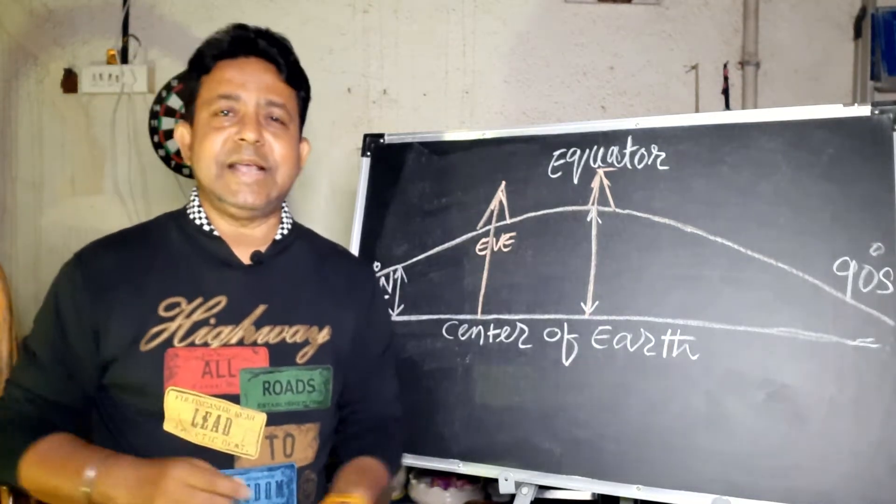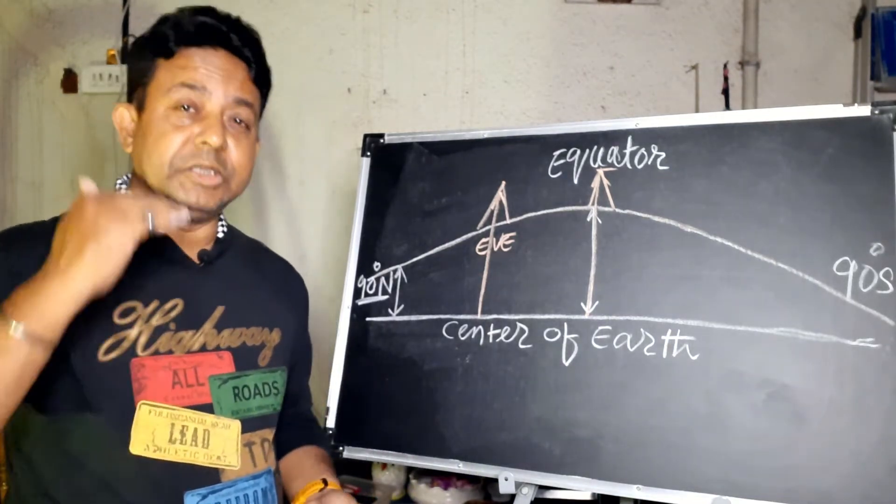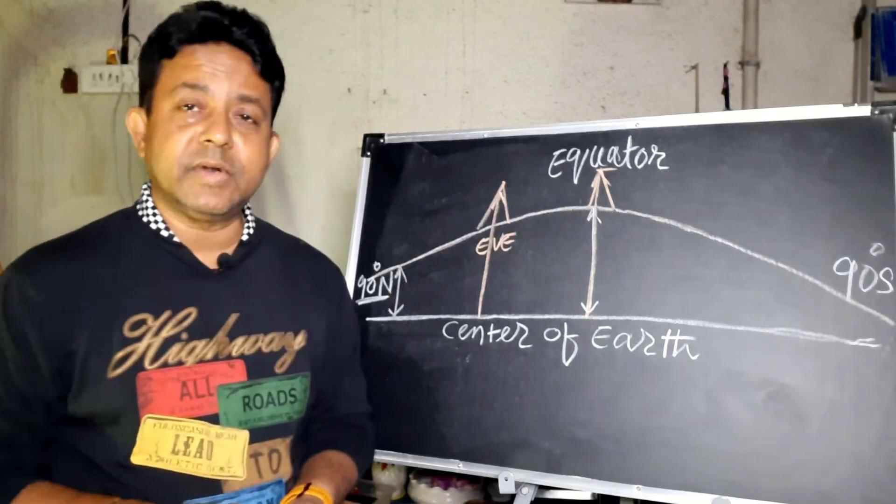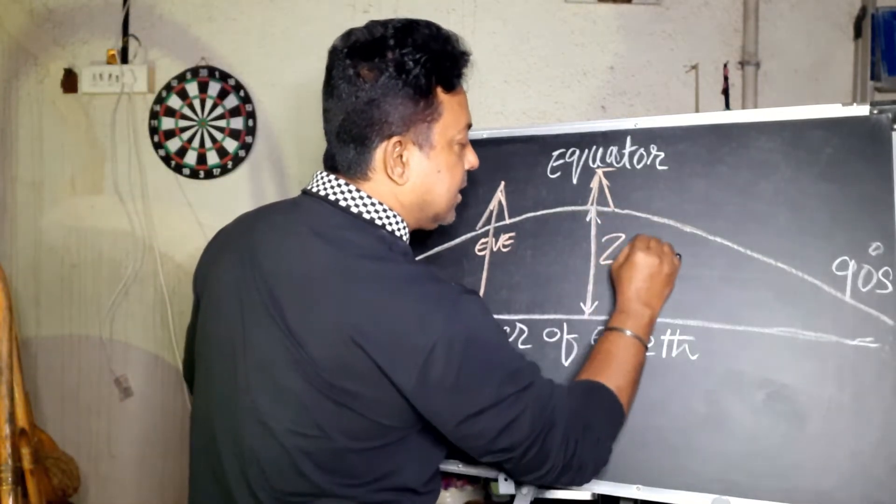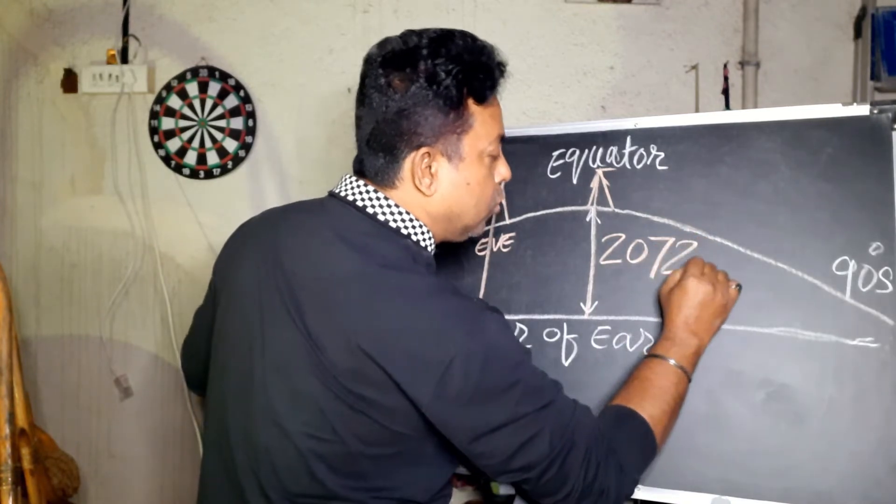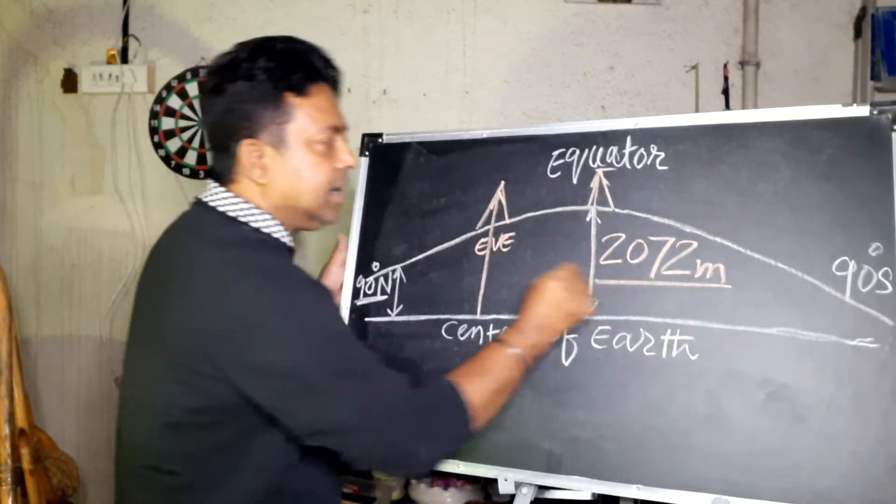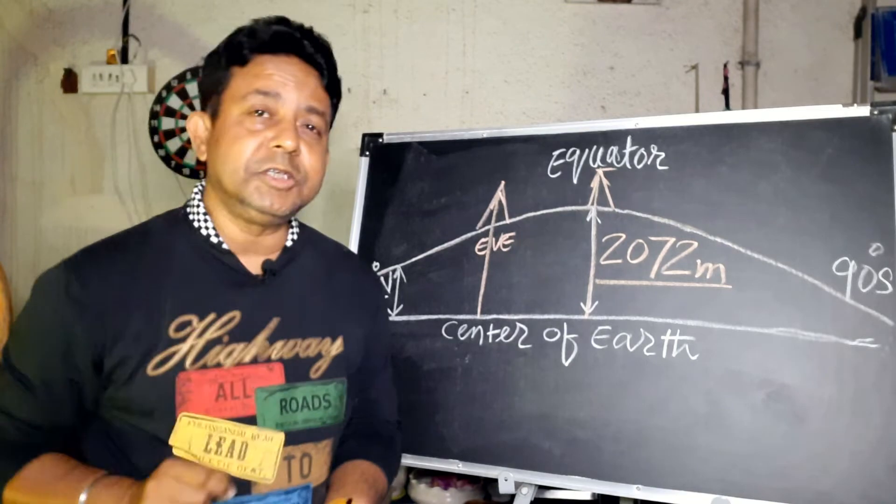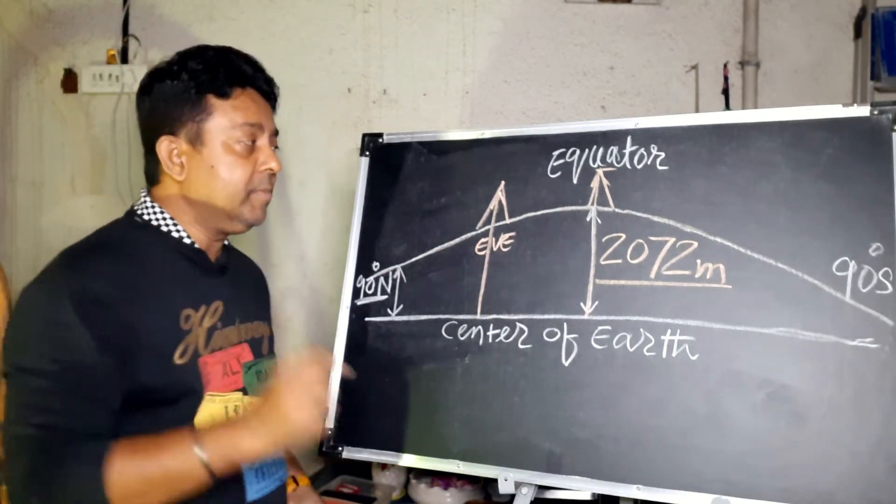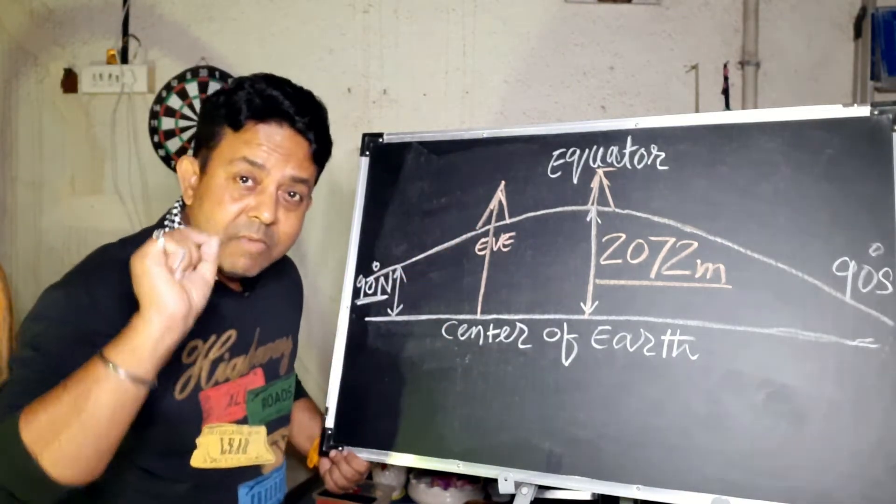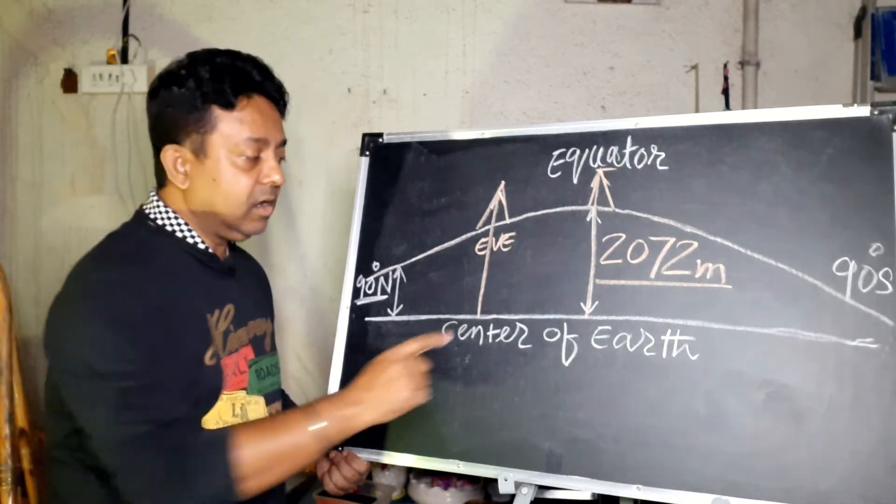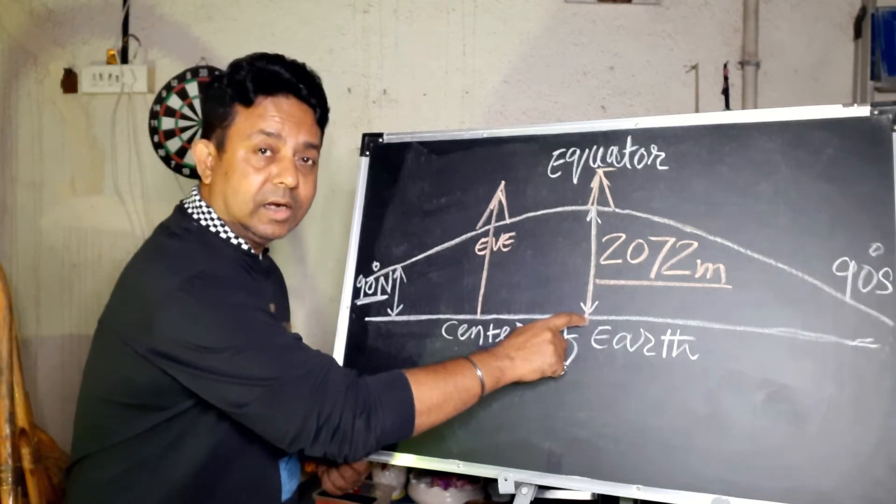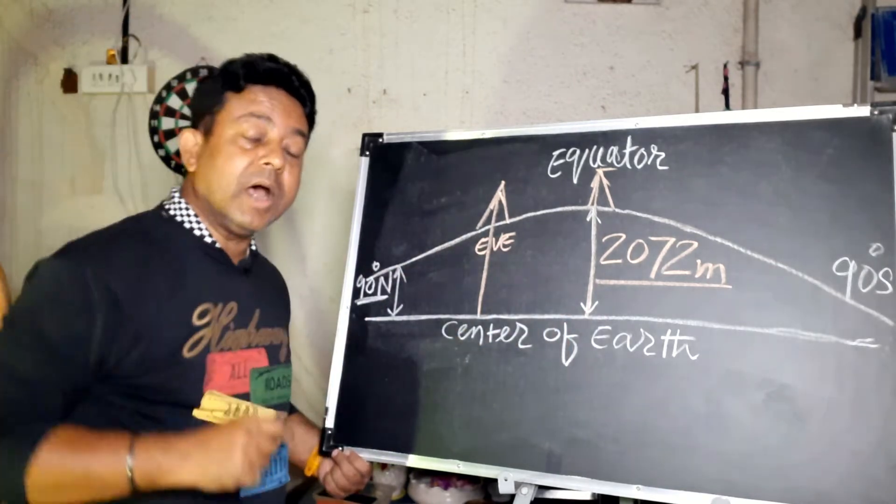So how much exactly is Mount Chimborazo jutting out more than Mount Everest? That is about 2072 meters. It means Mount Chimborazo is almost 2 kilometers higher than Mount Everest if you are measuring it from the center of the Earth or even from outer space.